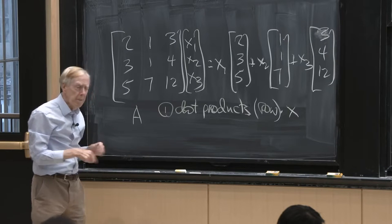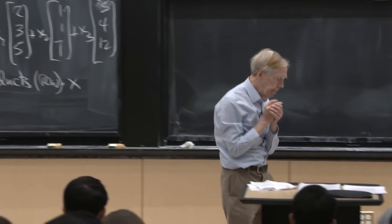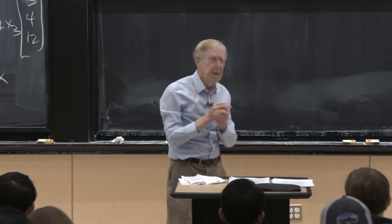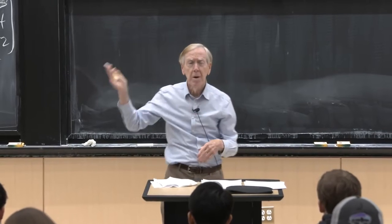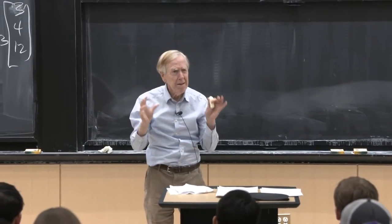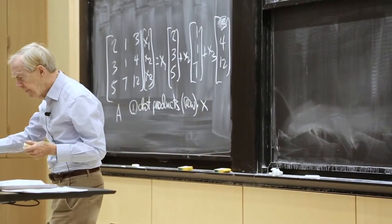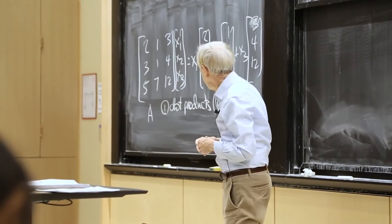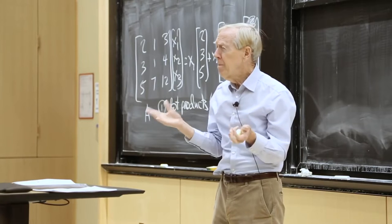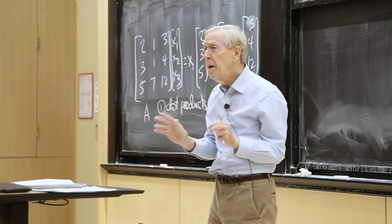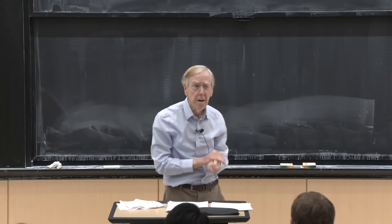So that's part of the course. Part of what I hope to get across is thinking of a matrix as a whole thing — not just a bunch of m times n numbers, but thinking of it as a thing. A matrix multiplies a vector to give another vector. When I say Ax, you immediately think: Ax is a combination of the columns of A.